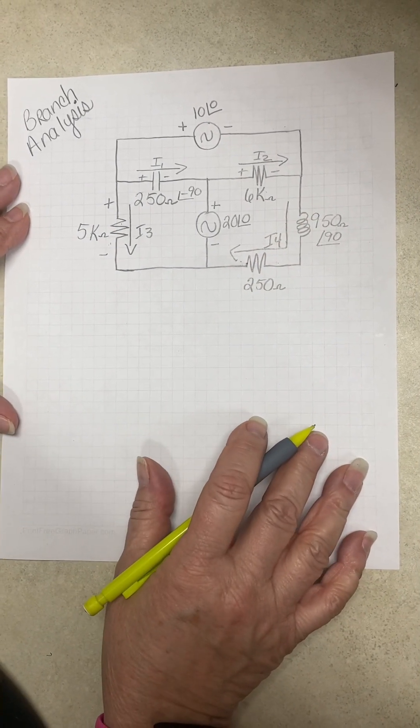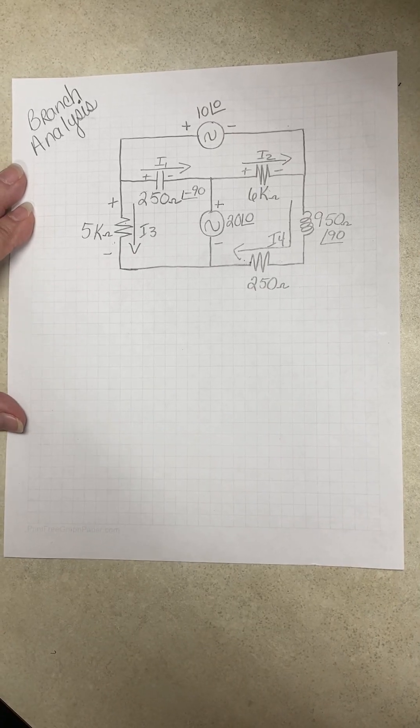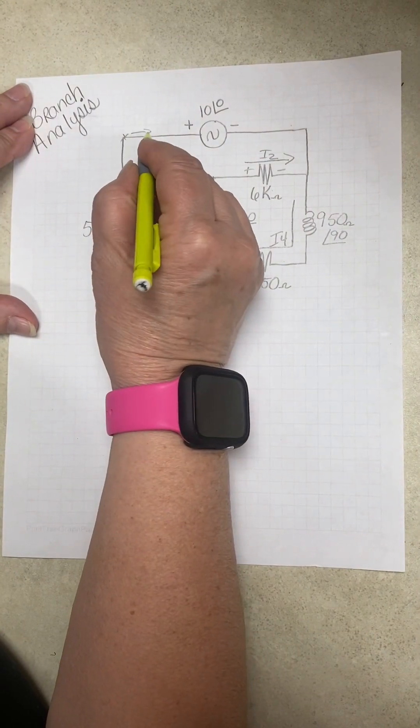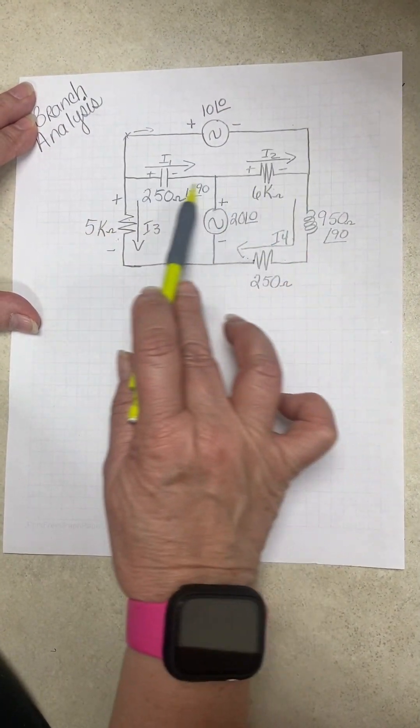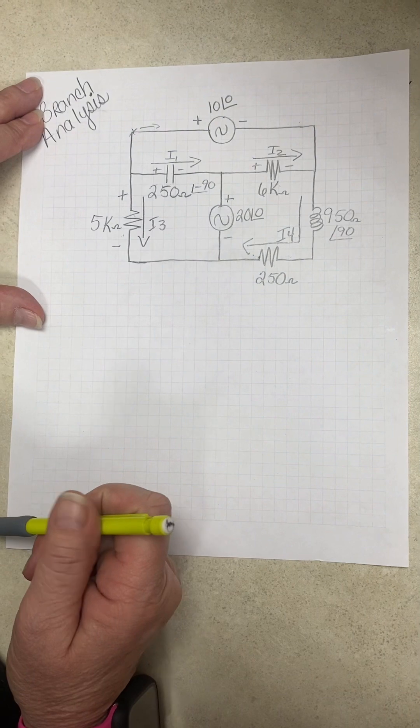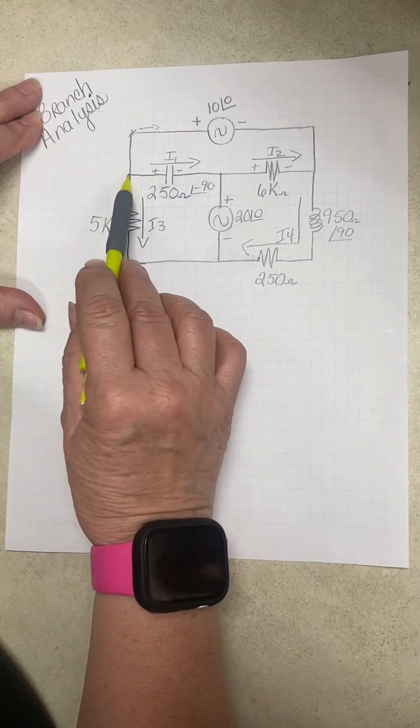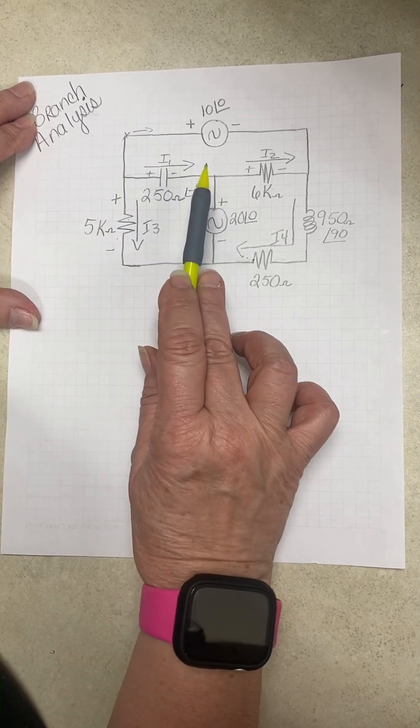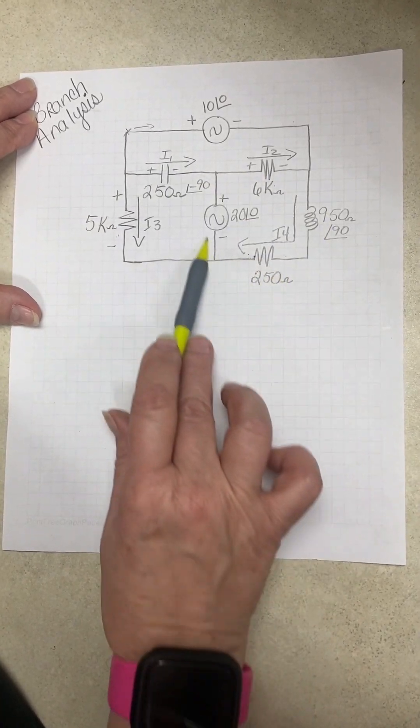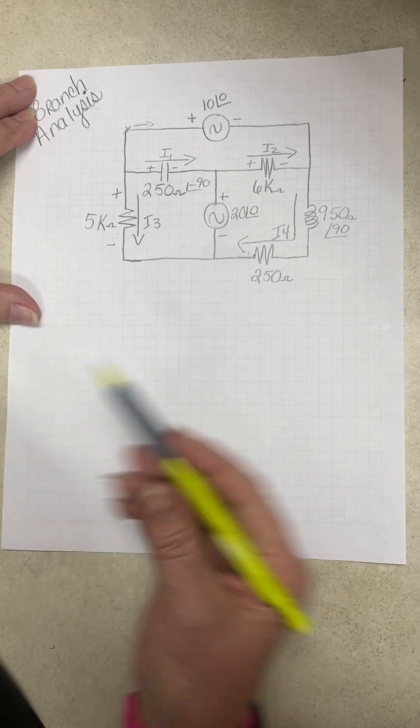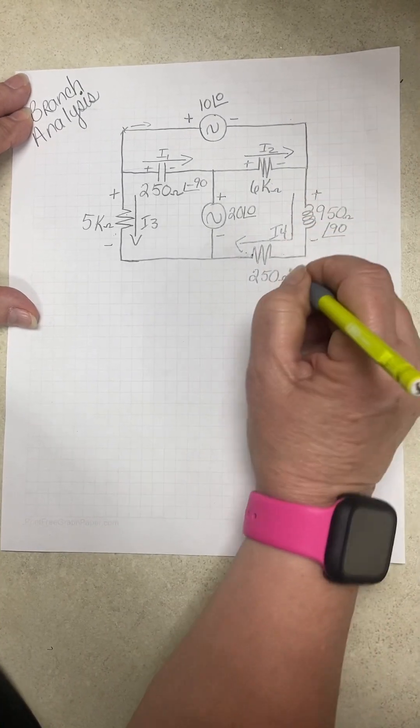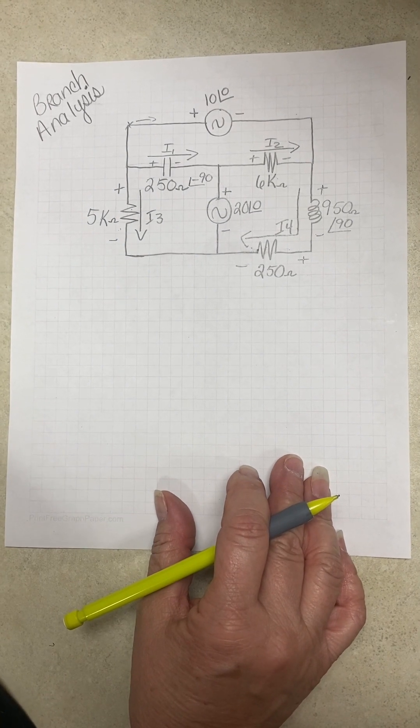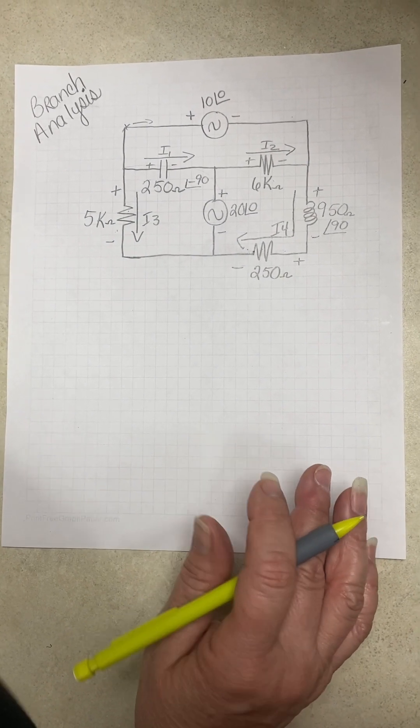There's four unknowns. We need four equations. Okay, so we're going to start here and go this way, and we're going to write everything down here and then fix the equation for one. We're going to start here, go this way, writing everything down for the second equation. Start here, go all the way around to write the third equation. But then we're going to be missing one equation, so we're going to have to write a KCL.